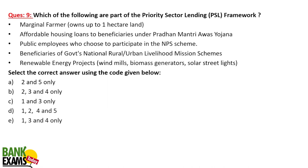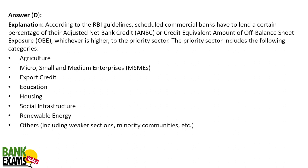Which of the following are part of the PSL — Priority Sector Lending — framework? On bankexamstudy.com, we do PSL analysis in depth and update it whenever there is a new RBI circular. The components of the PSL framework include: agriculture, MSMEs, export finance, education, housing, social infrastructure, renewable energy, marginal farmers, affordable housing loans, beneficiaries of government schemes like National Rural and Urban Livelihood Missions, and other weaker sections and minority communities. Public employees are NOT part of the PSL framework.